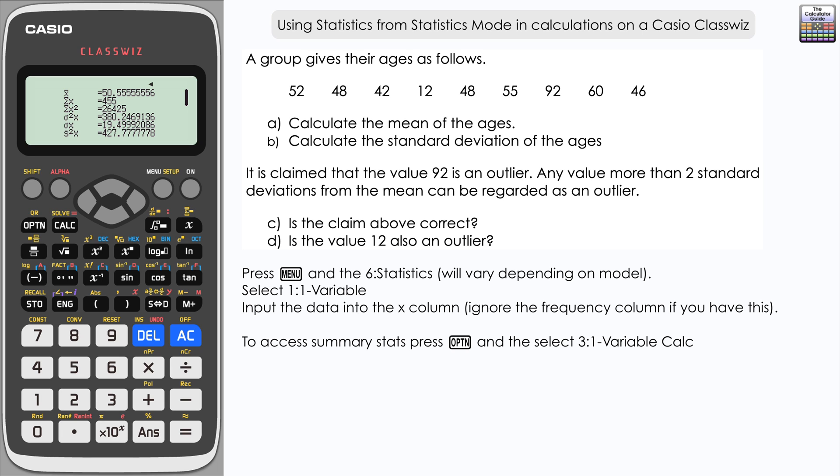We have the mean at the top there, X-bar 50.5 recurring, and then we have sigma, the standard deviation, 19.5. We'll round that to one decimal place.